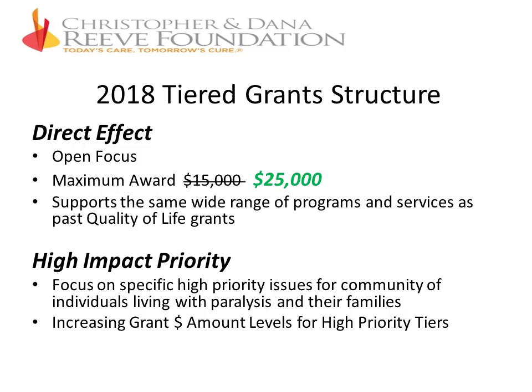In 2018, the Christopher and Dana Reeve Foundation adopted a tiered grants structure for the Quality of Life Grants Program. There are two types of grant tiers. The Direct Effect tier, which is what we're talking about today, is Open and Focus, with a maximum award now of $25,000. These grants support the same wide range of programs and services as were funded in past Quality of Life grants. The other tier is High Impact Priority Grants, which focus on specific high-priority issues for the community of people living with paralysis and their families.